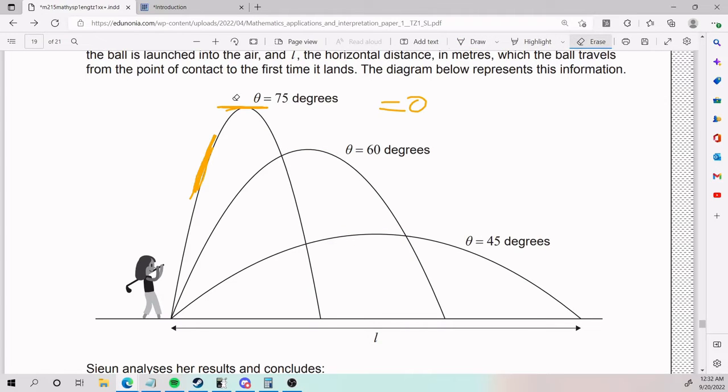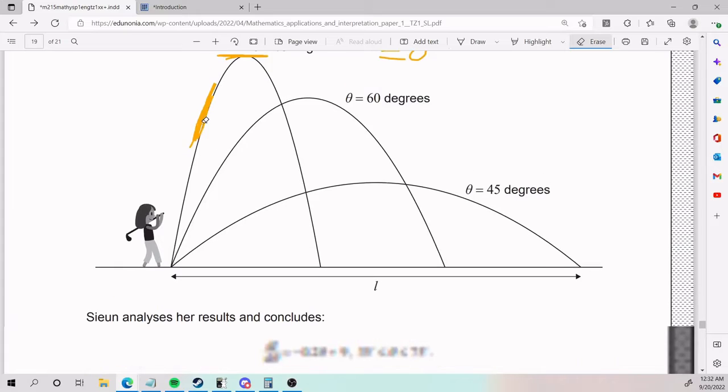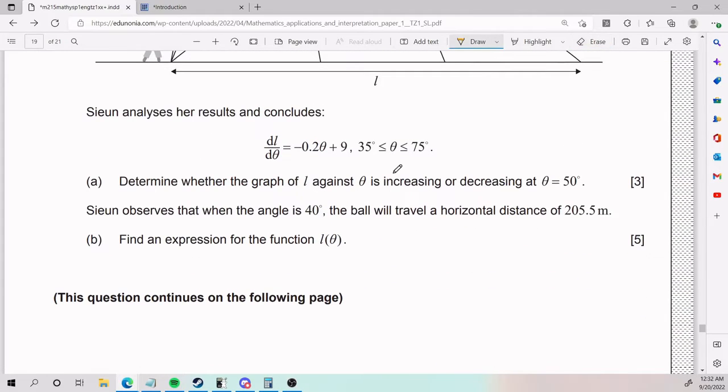And so we need to take this formula that they gave us and see if it's increasing or decreasing at 50. So if it's a positive value, it's increasing. If it's negative value, it's decreasing. Pretty straightforward.